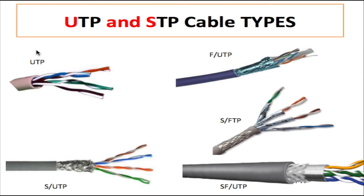Every Ethernet cable is rated for a particular frequency. For example, a category 5e type cable would be rated for 100 megahertz. When a frequency of 100 megahertz is sent through a cable, frequency drives current. As the frequency changes, the current changes, and when current changes it causes an electromagnetic field to be developed around the pair of wires.